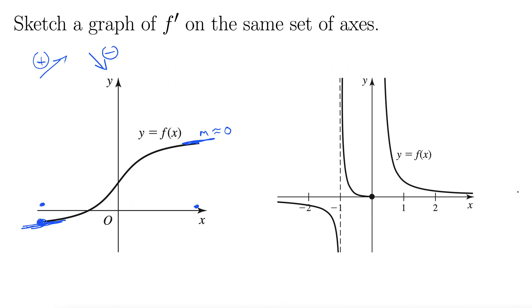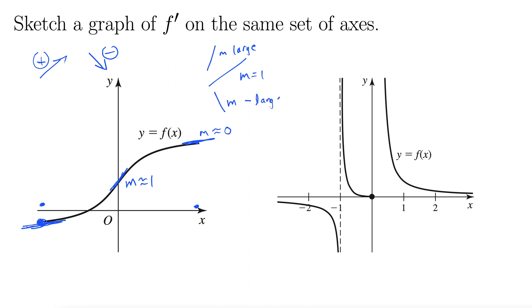You want to anchor these kinds of examples with places where the derivative is kind of close to zero. That gives you a starting point, because now we have these two points and we just have to figure out what happens in the middle. Notice that right about here the slope looks about like one — a perfect diagonal slope, m equals one. And if it's really steep, m is large. And if it's really going down, m is negative large.